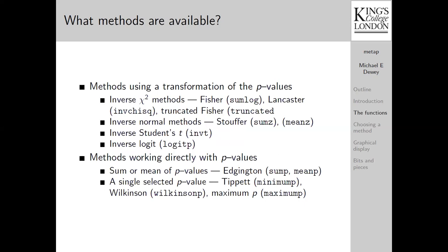So what methods do we have available in MetaP? Here I show the various methods, the eponym in normal typeface, and the name of the function in MetaP in parenthesis. There is a group of methods using some transformation of the p-values. They rely either on the inverse chi-squared distribution, inverse normal distribution, inverse student's t, or the inverse logit.